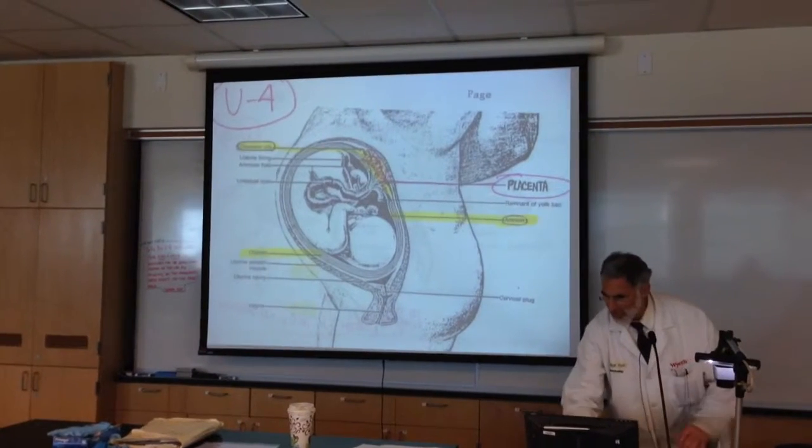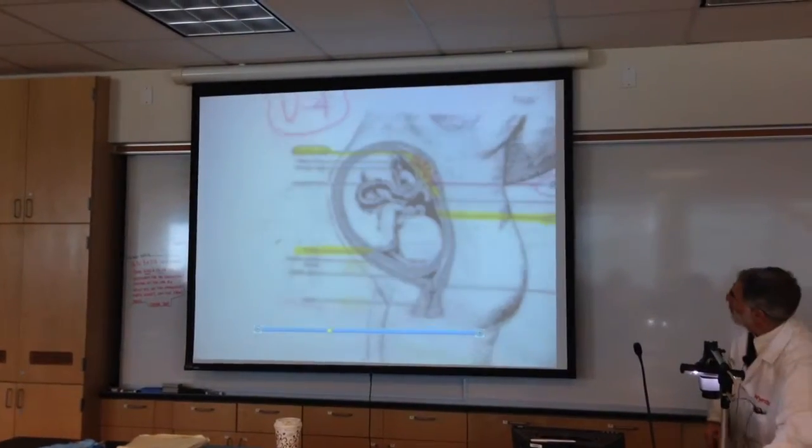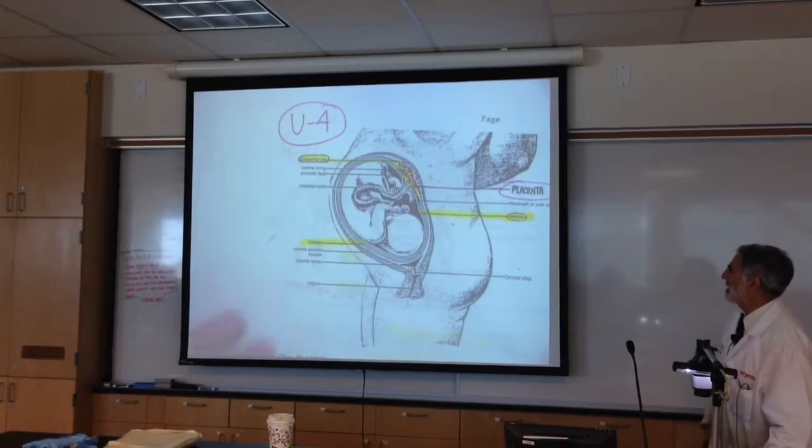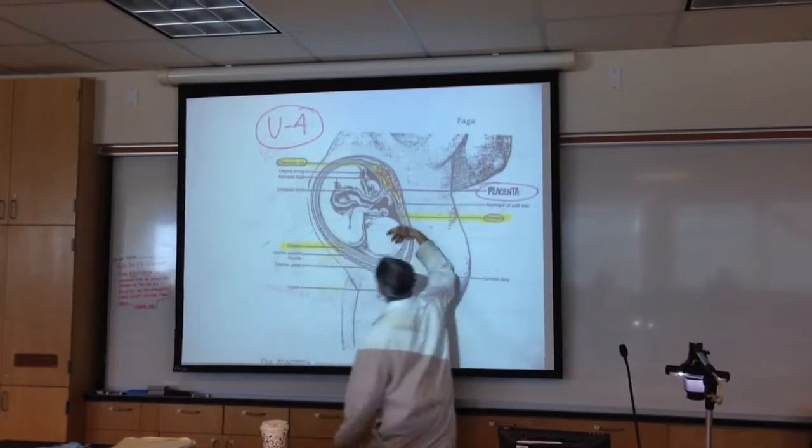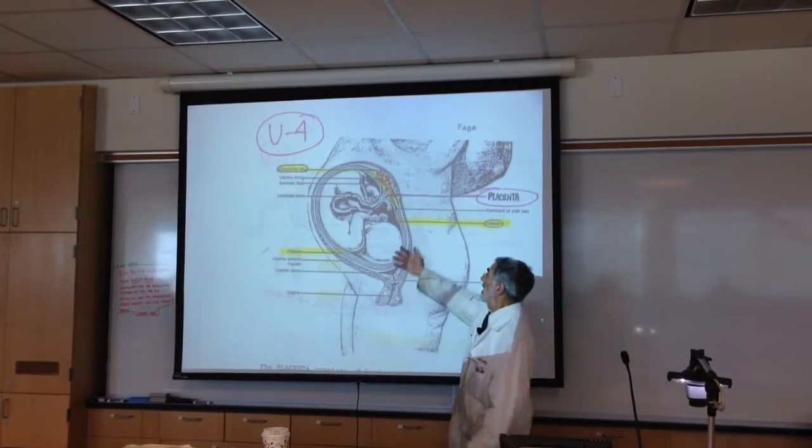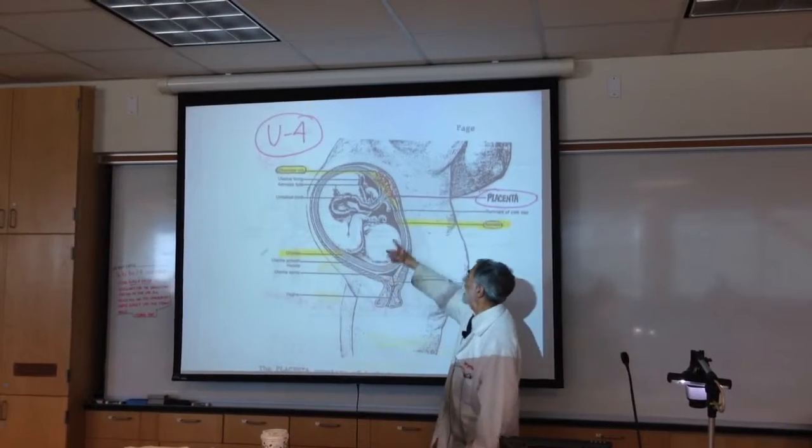And so, where we're at right now on U4. So, U4 shows what definitely looks like a pregnant woman. And here, there's actually the baby, this is almost full term, developing inside an inner amniotic and an outer chorionic sac.